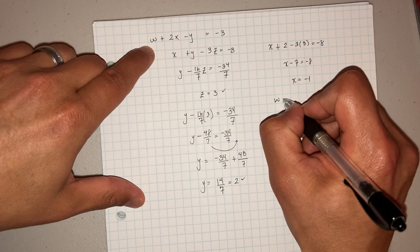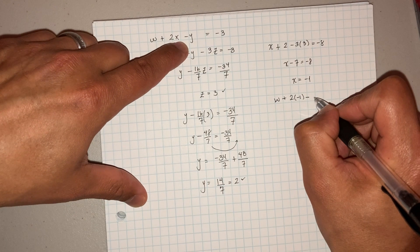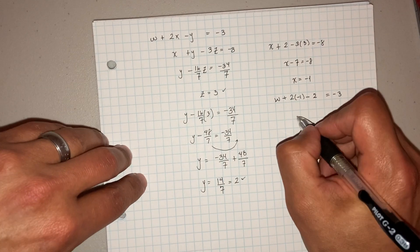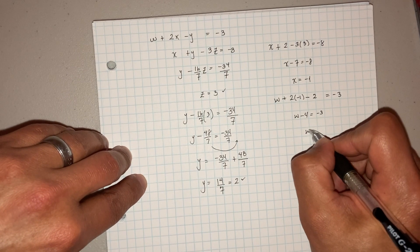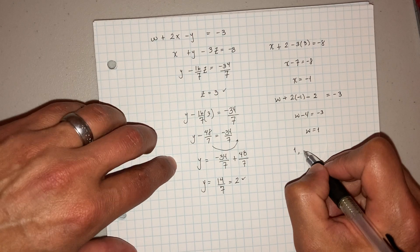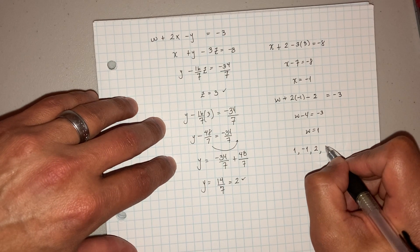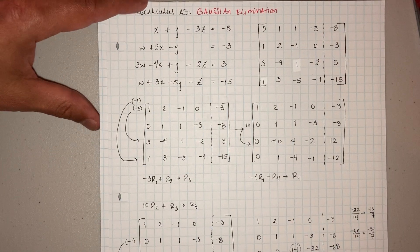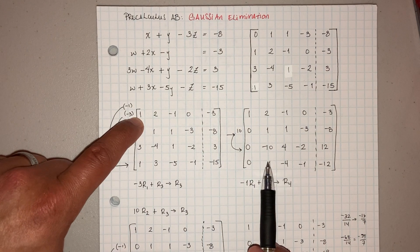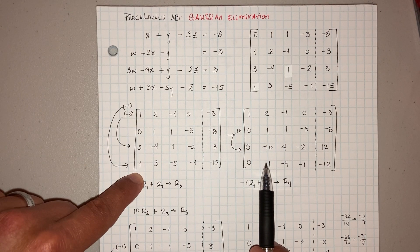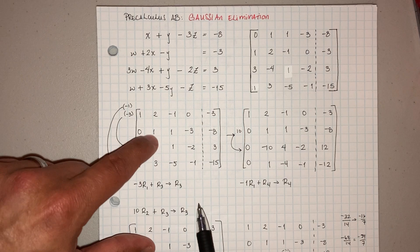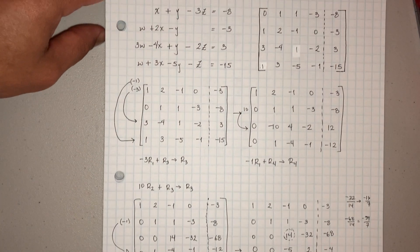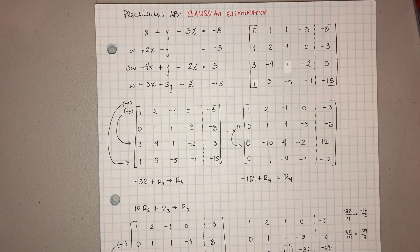So W plus 2 times negative 1 minus Y equals negative 3. Y is 2, so W minus 2 minus 2 equals negative 3, giving W minus 4 equals negative 3, so W equals 1. So the solution is W equals 1, X equals negative 1, Y equals 2, and Z equals 3. The key is the order: make the top corner 1, use that pivot to make zeros below, then move to the next pivot, and so on. Hopefully that helps you out — keep working hard!